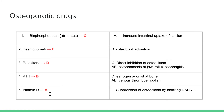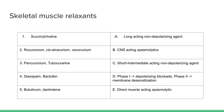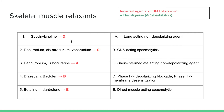Vitamin D helps to increase intestinal uptake of calcium, so we can also use vitamin D to help form new bone. For skeletal muscle relaxants: succinylcholine is your depolarizing agent. Phase one produces a depolarizing blockade; in phase two the membrane gets desensitized from constant depolarization. Options two and three are non-depolarizing agents — rocuronium, cisatracurium.